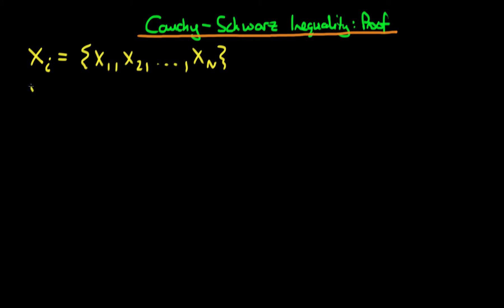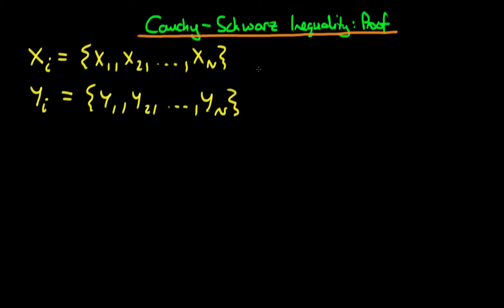We also define a sequence of another variable, which I'm going to call yi, which is the sequence y1, y2, all the way through to yn. After I've defined both of these sequences, we can actually write down what the Cauchy-Schwarz inequality says.